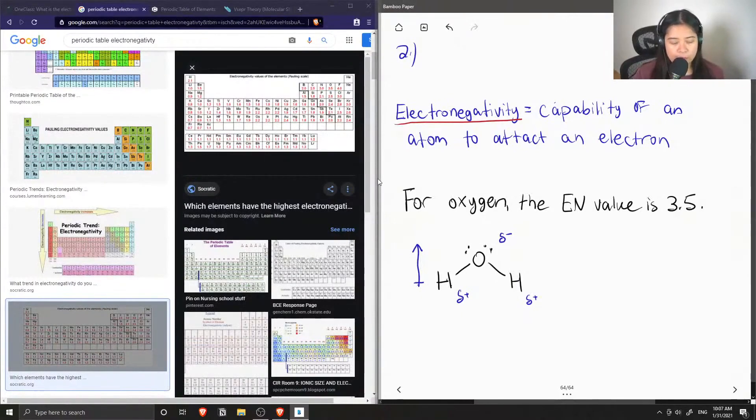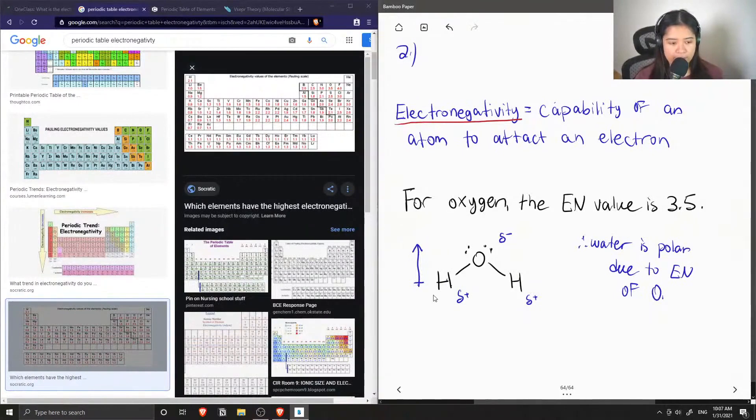So this is why water is polar—due to the electronegativity of oxygen. The hydrogens aren't electronegative enough to balance out oxygen, and the fact that there are two lone pairs makes the water molecule bent. So that's why it's not symmetrical and why water is polar.